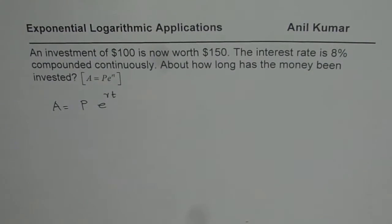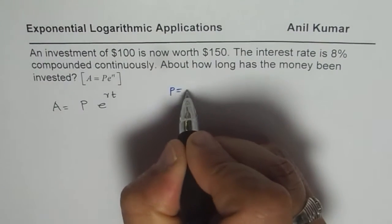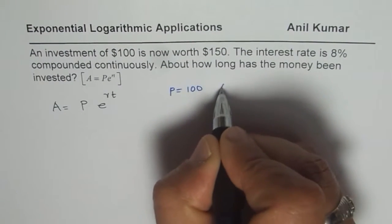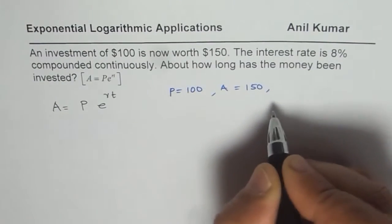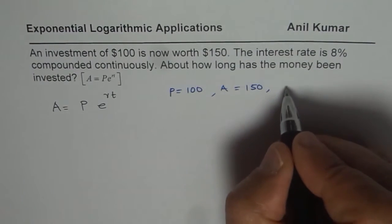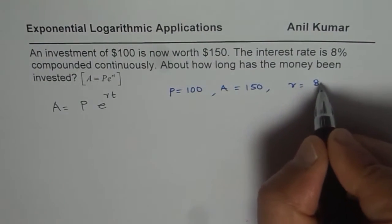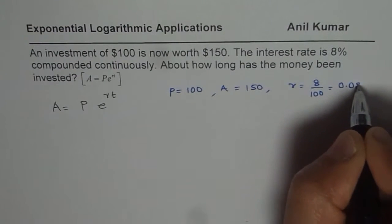And here what we know is that the principal amount P equals $100. The final amount A is $150. So these are in dollars. And we also know the interest rate, which is 8%. So R is 8% means 8 divided by 100, which is 0.08.